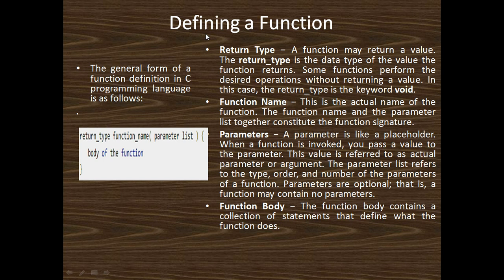Now I describe defining a function. The general form of a function definition in C programming language is as follows. First we describe the return type, then the function name, then the parameter list which is optional, and inside the curly braces we define the body of the function.